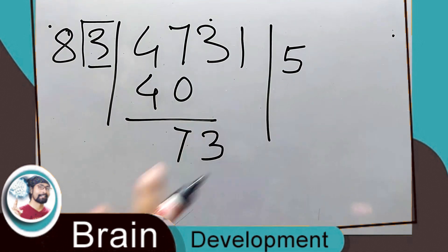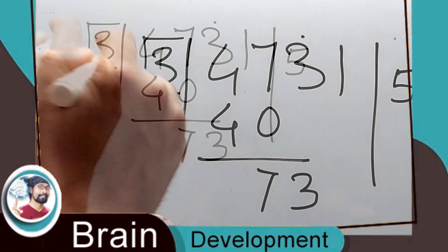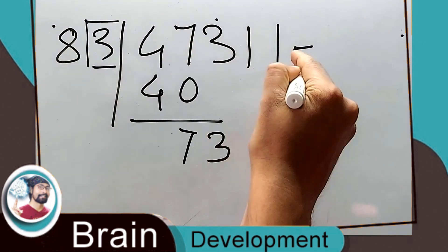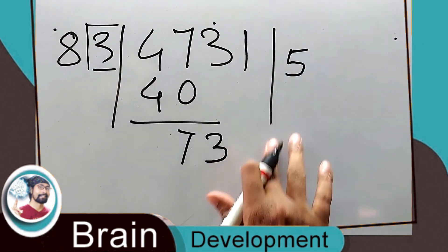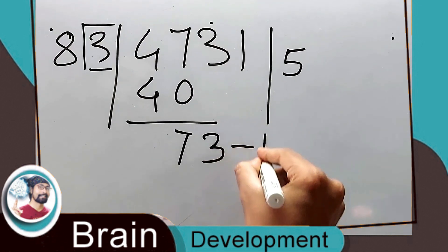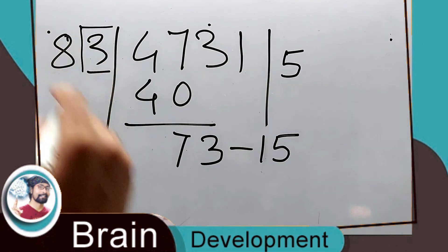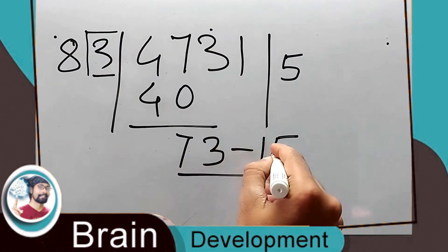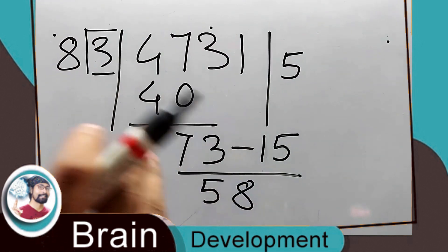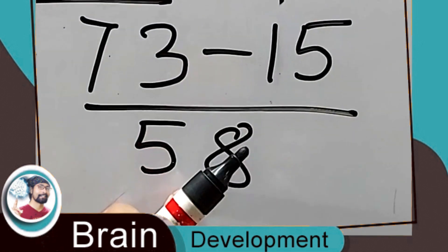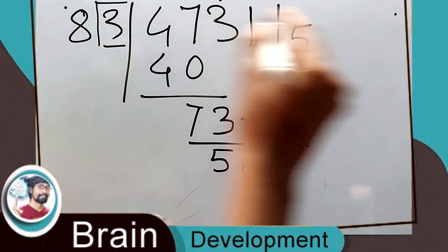Now here is the trick: this 3 has to be used. Three into five is 15, so now subtract 15 — because we have not used this 3 before. The answer is 58. Again, this 58 has to be divided by 8.